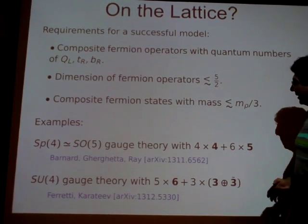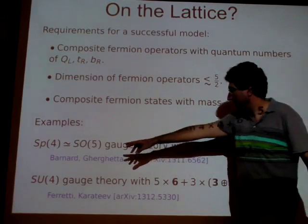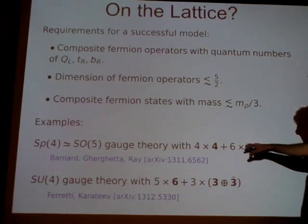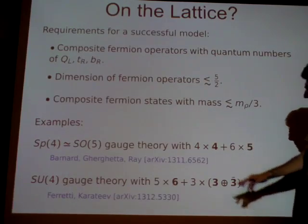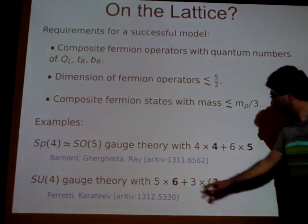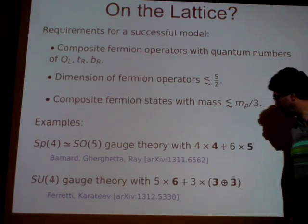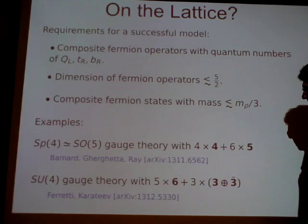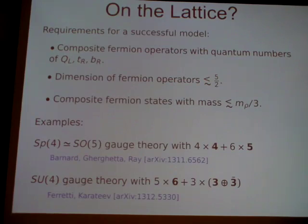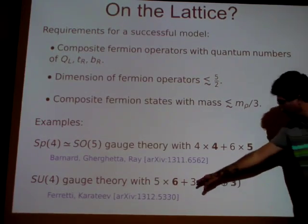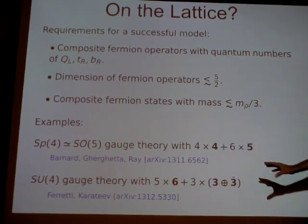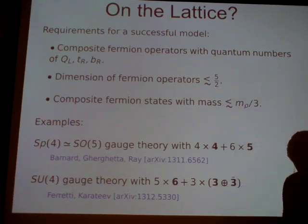There are theories that are candidates for this — some relatively simple gauge theories that satisfy at least the requirements of having the composite operators and having a vacuum that can either preserve or violate electroweak symmetry. Examples include SO(5) gauge theory with spinors and fundamentals, or SU(4) gauge theory with anti-symmetric tensor representations. You can read about these, but there are some theories that satisfy all of these requirements.